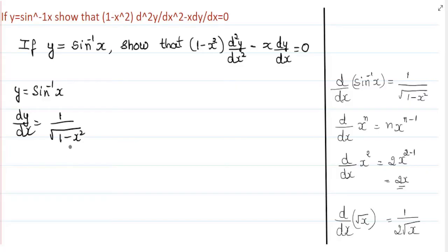Now, we will bring this term to the LHS. So, root of 1 minus x squared into dy by dx is equal to 1.